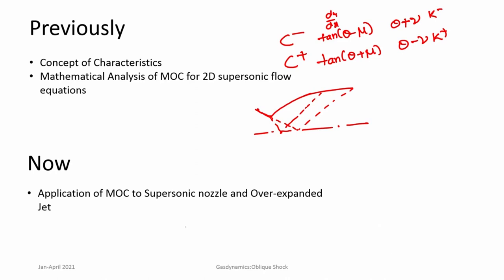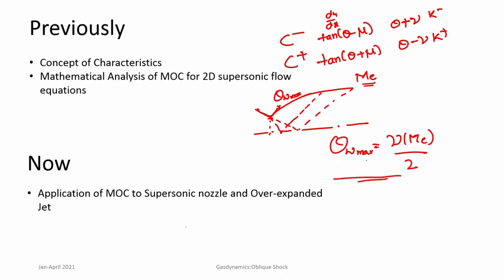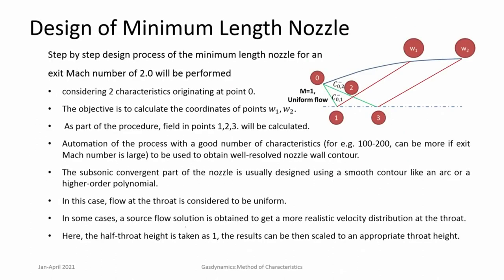We had a relationship for what the flow turn should be. If I know my exit Mach number Me, I have to give a certain flow turn so that the flow expands — that is the theta-wall maximum that I have to give in order to achieve a certain Mach exit. This relationship was: theta-wall-max equals the Prandtl-Meyer angle of the exit flow divided by 2. This was also proved using the method of characteristics itself. Now let us apply this process for the design of a minimum length nozzle for Mach 2.